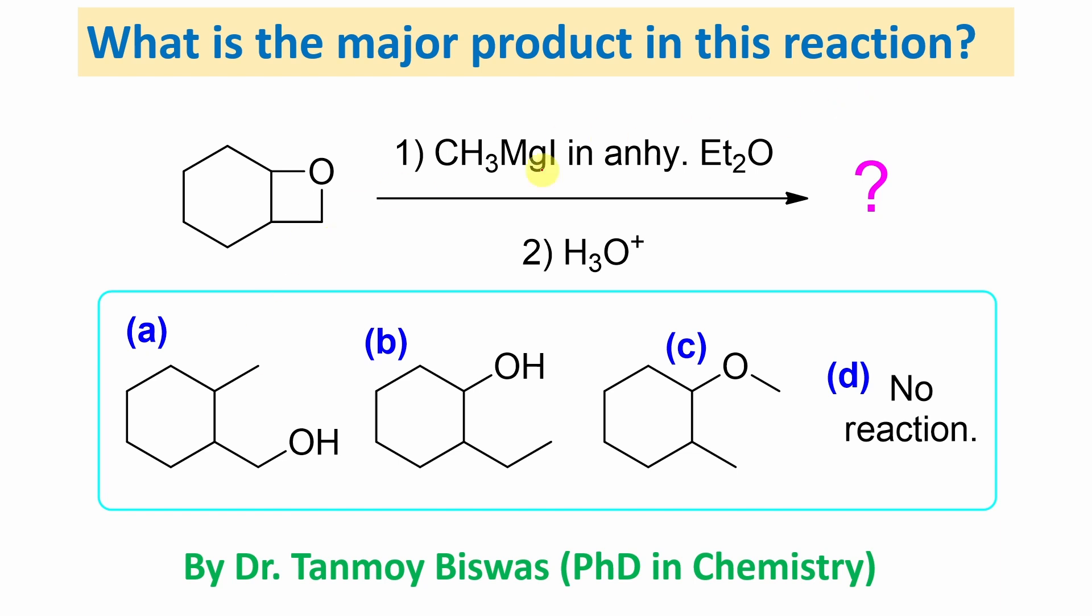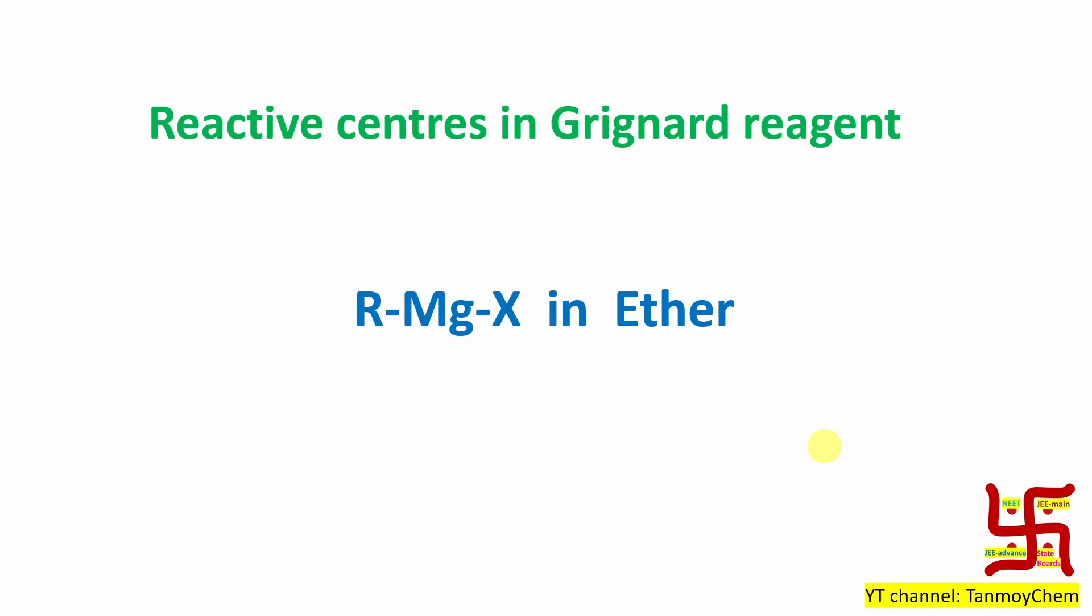Now, what is the major product of this reaction? So, this is actually a four-member ring with oxygen, another six-member ring. It reacts with this Grignard reagent and the next step is acidic workup. So, what is the product or is it no reaction? That's the question. Before going to the main discussion, let's learn a little bit about the reactivity of Grignard reagent.